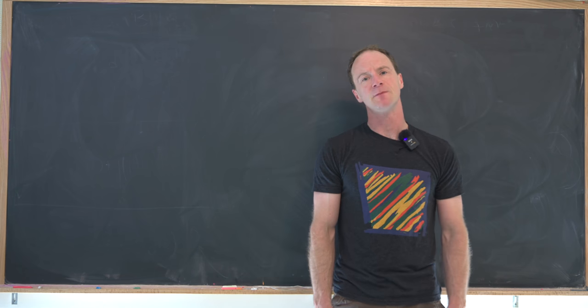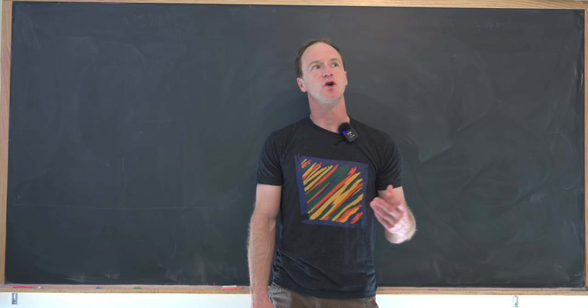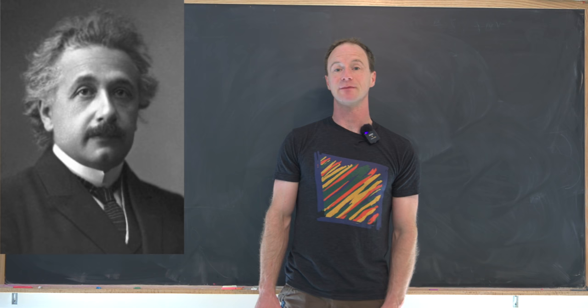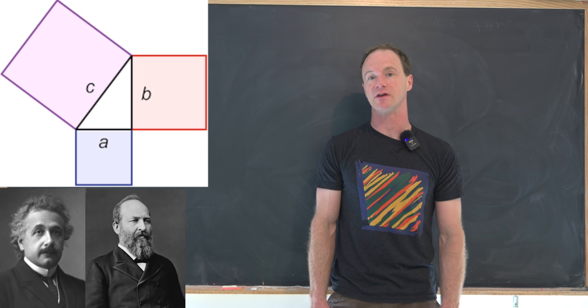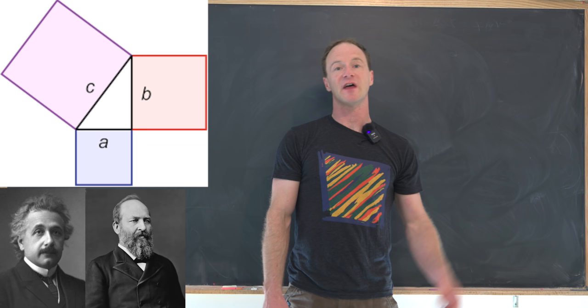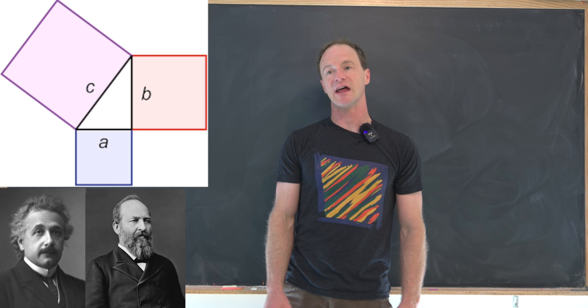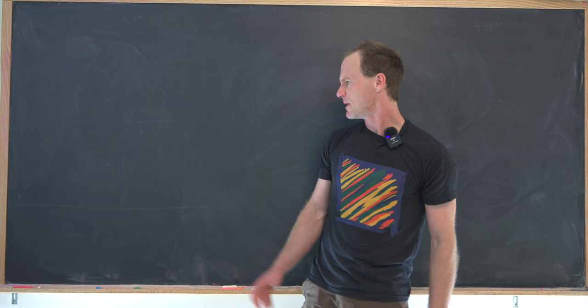I've got a pretty interesting video today and it starts with a pretty strange question: what do Albert Einstein, the very famous physicist, and James Garfield, the former president of the United States from the late 1800s, have in common? They both wrote their own proofs to the Pythagorean theorem. In this video we're going to look at each of those proofs — Einstein's proof from when he was in grade school, and Garfield's proof from when he was in the House of Representatives.